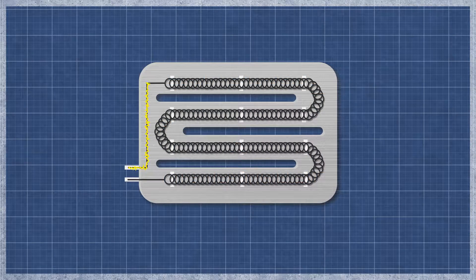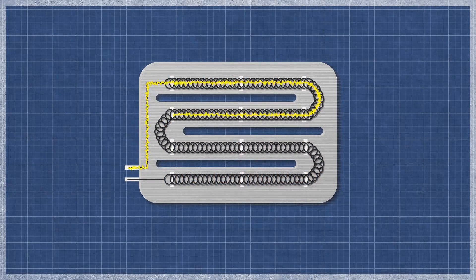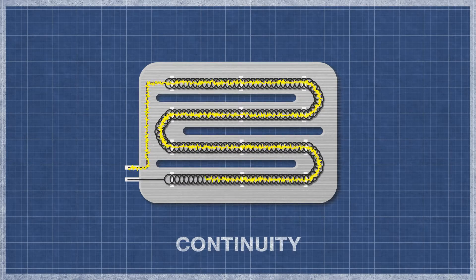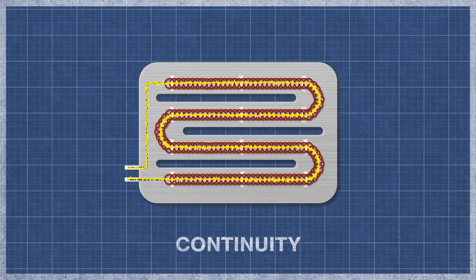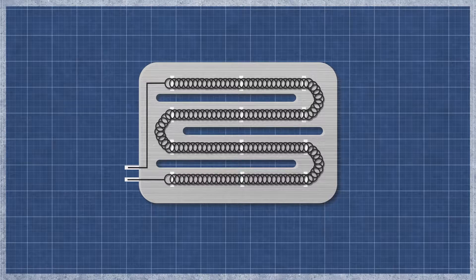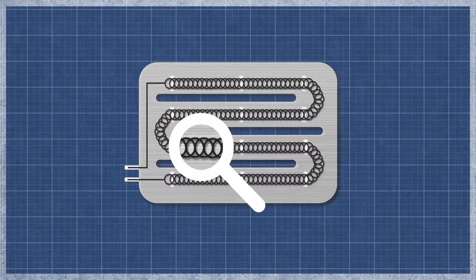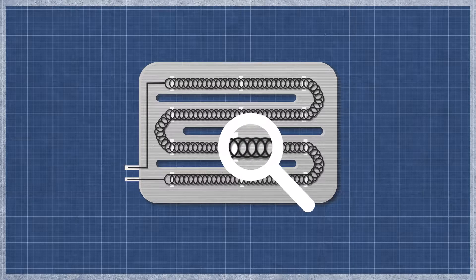A dryer heater works similarly to an incandescent light bulb. As electricity flows through the element, the resistance in the material generates heat. The element can burn out over time with normal use and may appear singed or cracked. This can be difficult to see as even a small break can cause an element to fail.